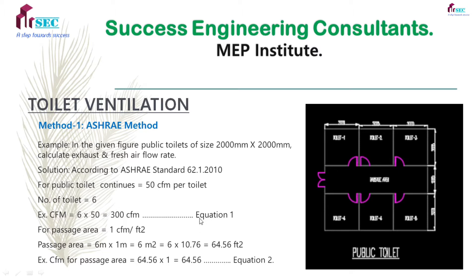For passage area, consider 1 CFM per square feet. Passage area is 6 meter by 1 meter, so 6 square meters. One square meter is equal to 10.76 square feet, so converting this gives 64.56 square feet. Exhaust flow CFM for passage area is 64.56 into 1, so 64.56 CFM.